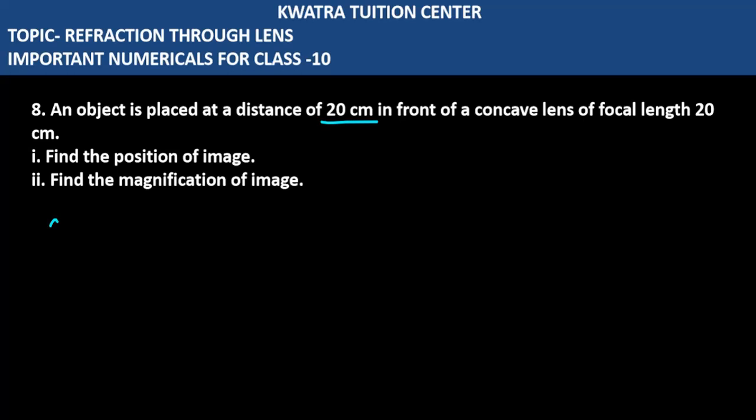What is the object distance? It always happens on our left side, so it will be minus 20 cm. What is the focal length of the concave lens? It is negative. So this is minus 20 cm.